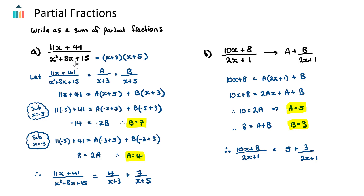Now as we hopefully know how to factorize a quadratic, we should see that this quadratic becomes (x+3) multiplied by (x+5). So step one, if we have a quadratic on the denominator, is to factorize. Step two is to write a sum of partial fractions with the factors as our denominators and the numerators unknown for now. We rewrite what we have and make it equal to unknown numerators — I'll call them A and B — with the factors from step one as the denominators.